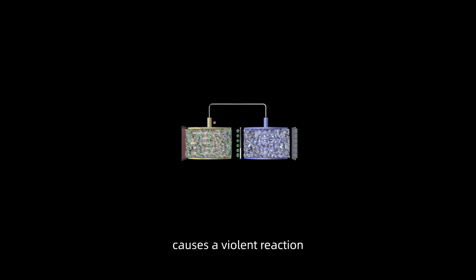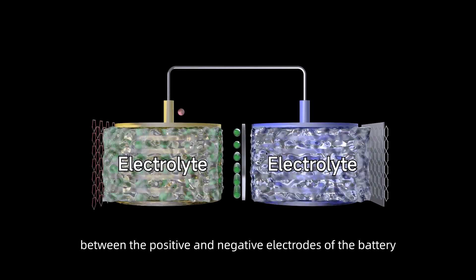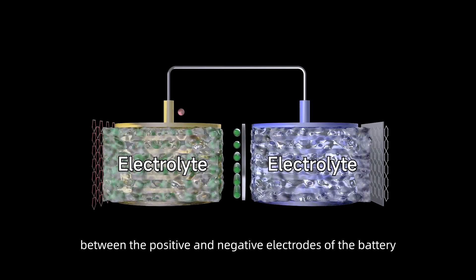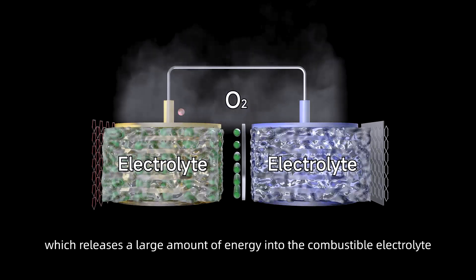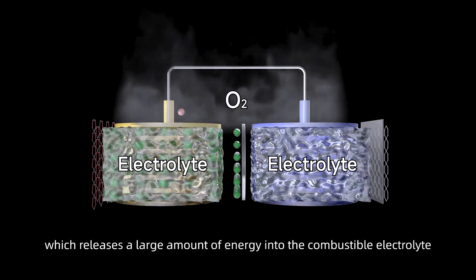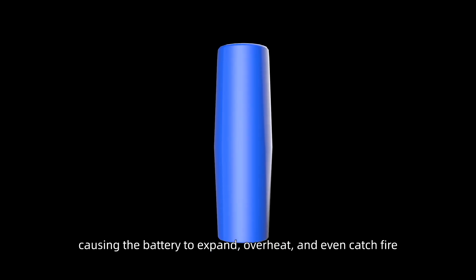First, the high temperature of the environment causes a violent reaction between the positive and negative electrodes of the battery, which releases a large amount of energy into the combustible electrolyte and releases oxygen, causing the battery to expand, overheat, and even catch fire.